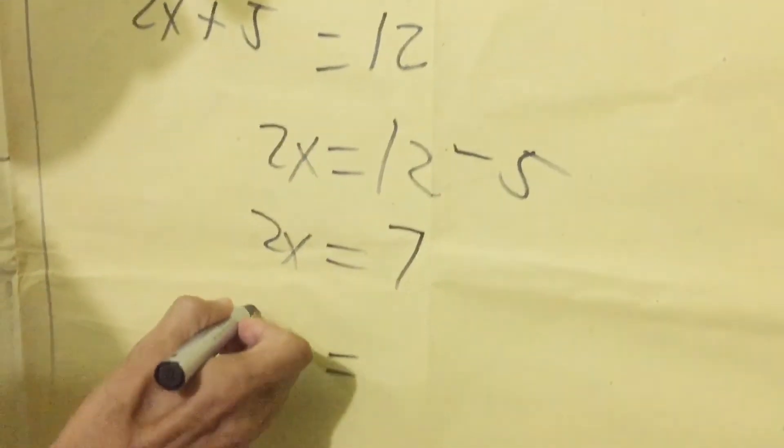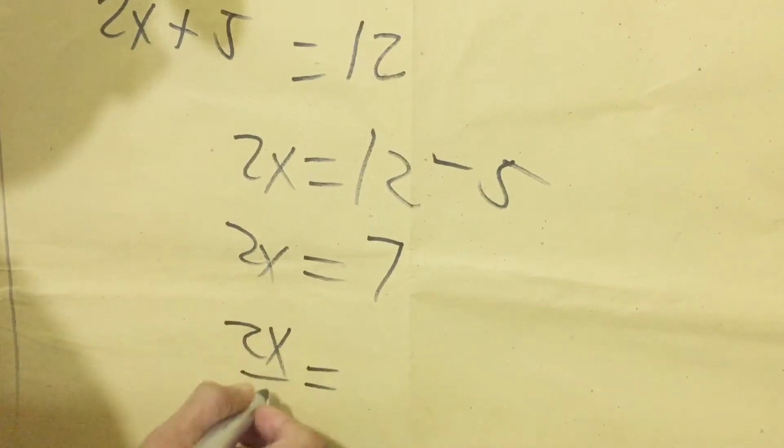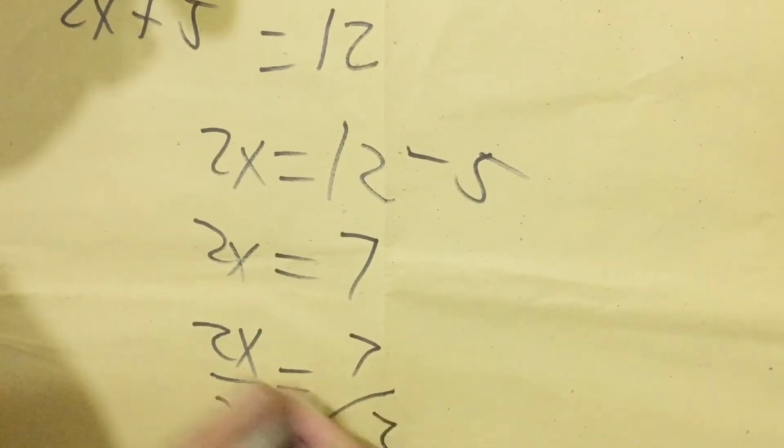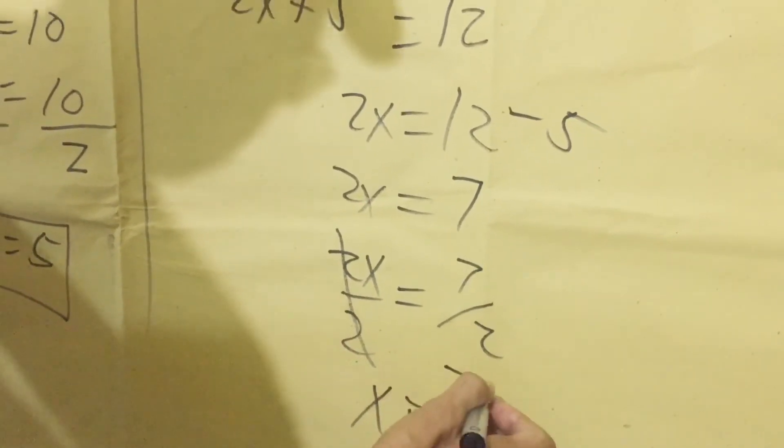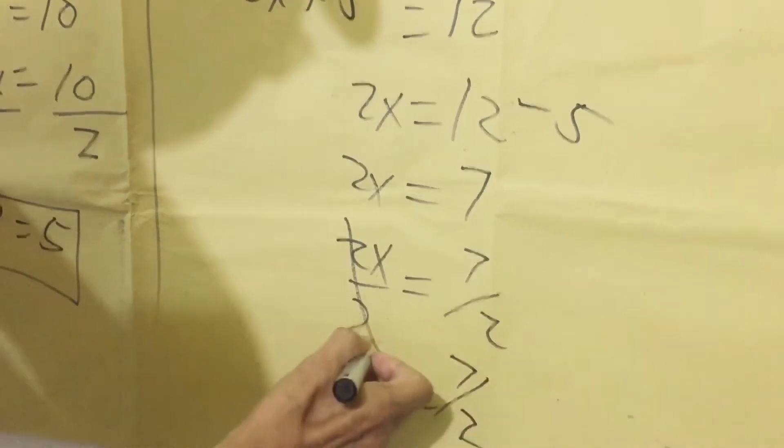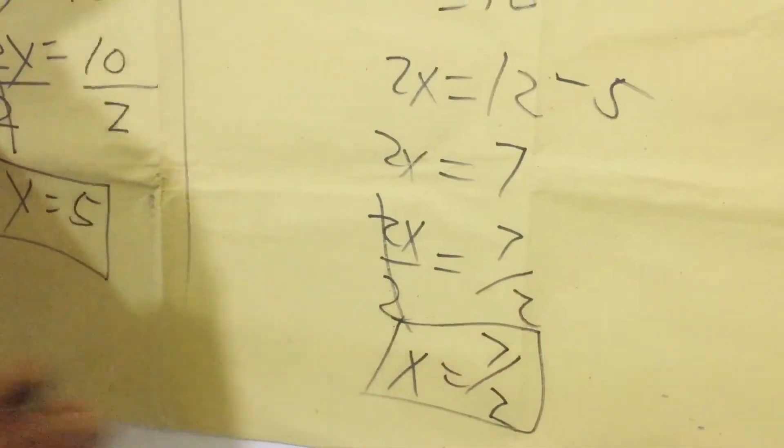Then we're going to divide by 2 just to have the value of x. Both sides we're going to divide. x equals 7 over 2. So we have now the value of x and y.